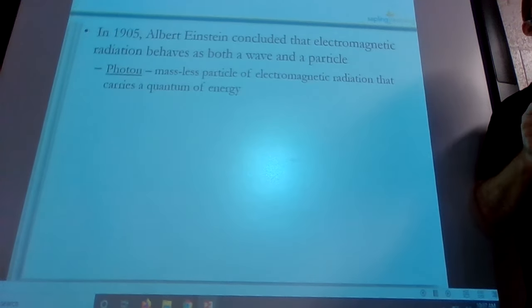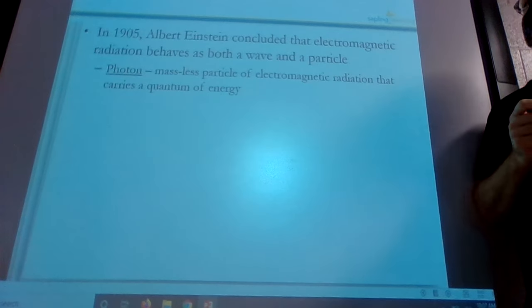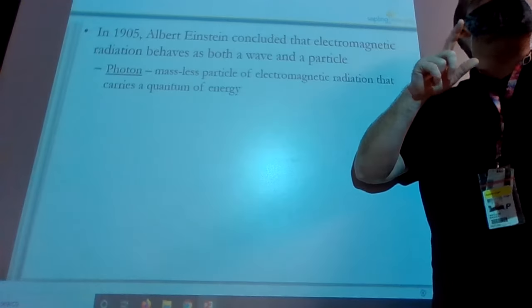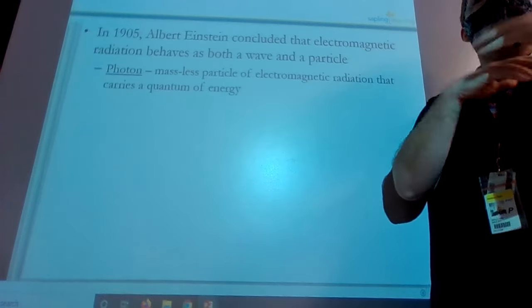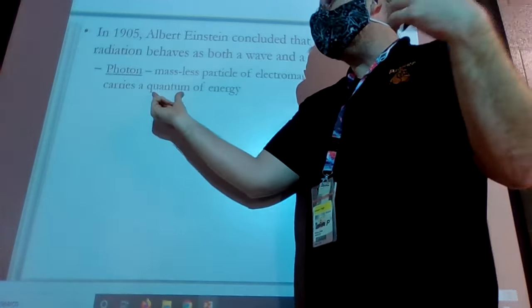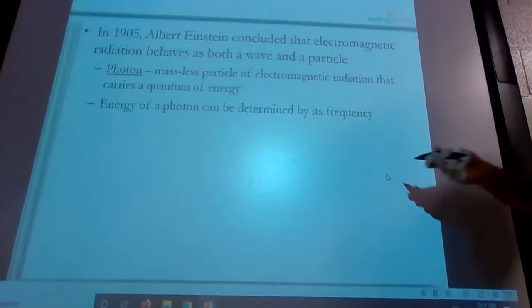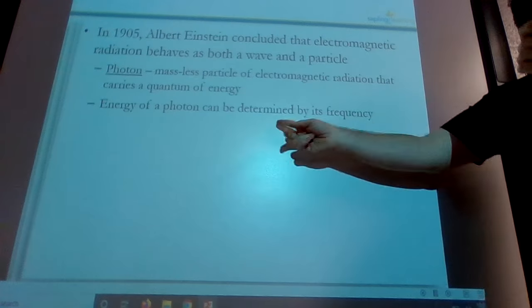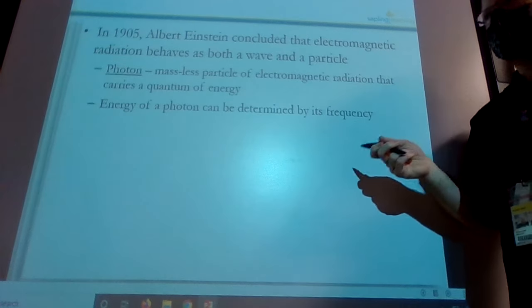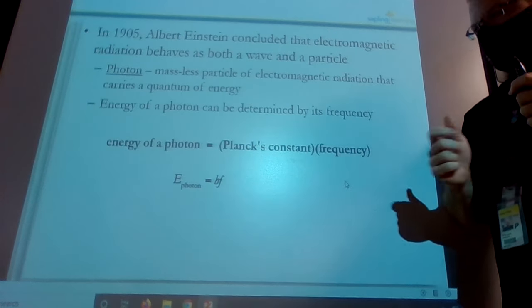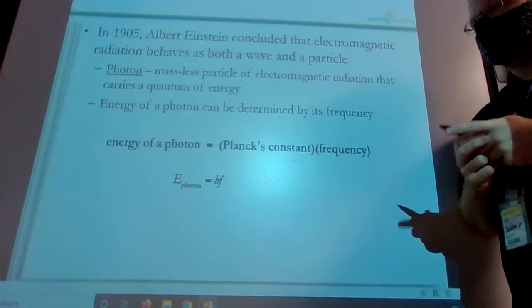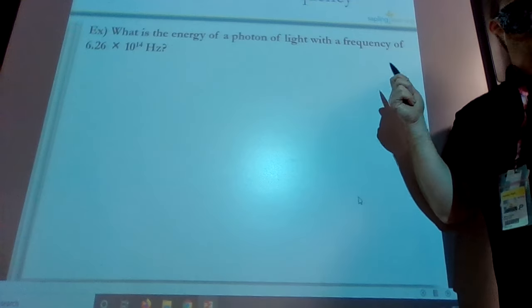But radiation behaves as both a wave and a particle, according to Einstein in 1905. He took that quanta idea, just a little packet of energy that goes along with the light, and he called it a photon. So a photon is a massless particle. Remember, light doesn't have any mass. There's nothing solid about it. It's just pure energy. A massless particle of electromagnetic radiation that carries a quantum of energy, a little packet, a little amount of energy. The energy of a photon can be determined by its frequency. So he figured if we can figure out the frequency, we can do the math to figure out the energy thanks to Planck's equation.